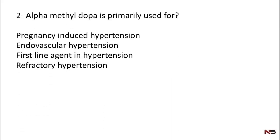Question number two: alpha methyldopa is primarily used for - pregnancy induced hypertension, renovascular hypertension, first line agent in hypertension, refractory hypertension. It's time to write the answer.